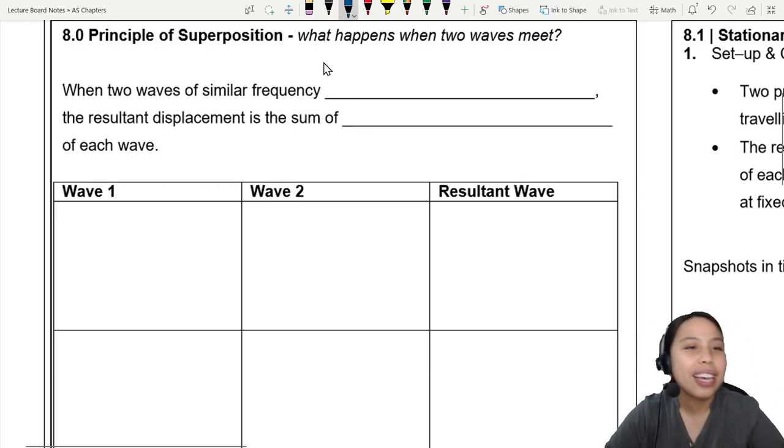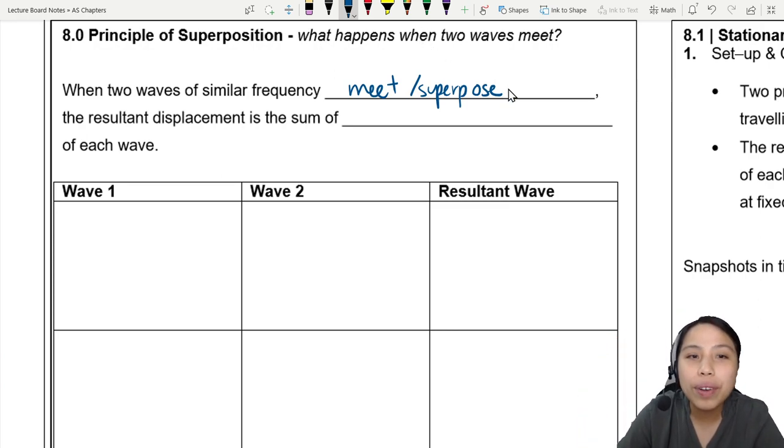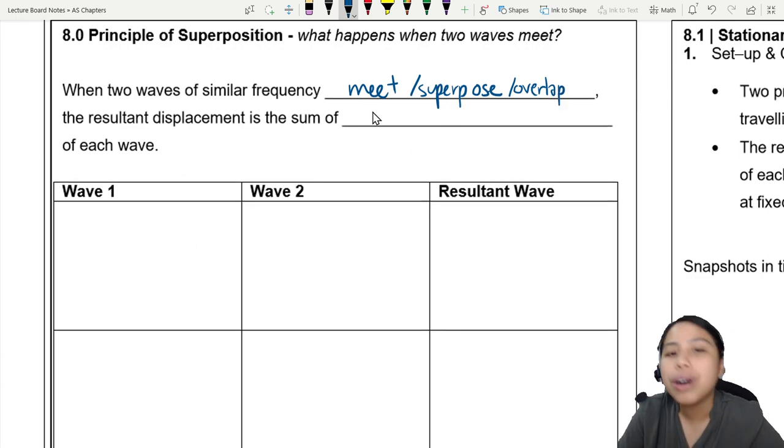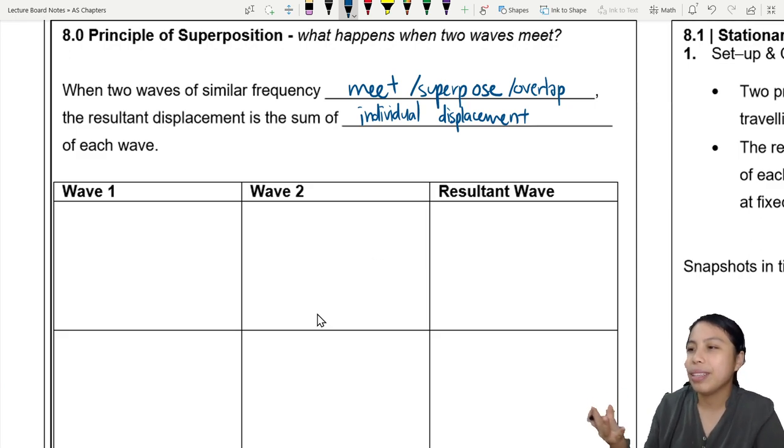Now let's define that a little bit. When two waves of similar frequency meet, or I guess the more physics word that we can use here is superpose, means they overlap with each other. The resultant displacement is the sum of the individual displacement of each wave. What does that mean? Let's look at some examples here when the wave comes together.